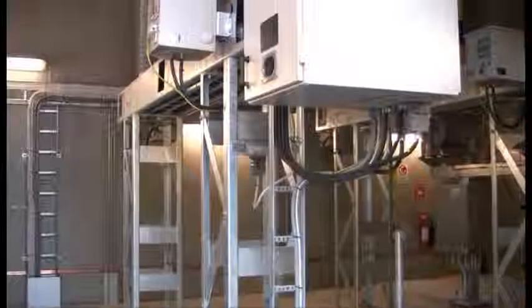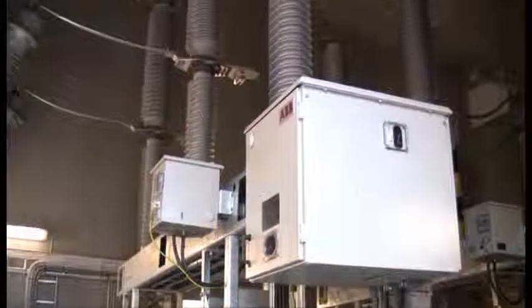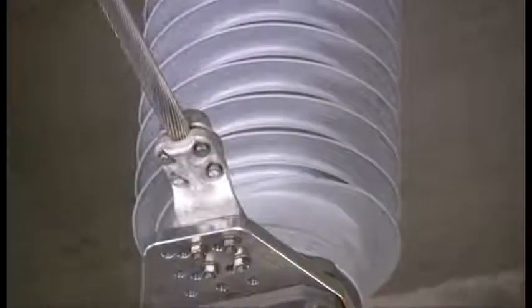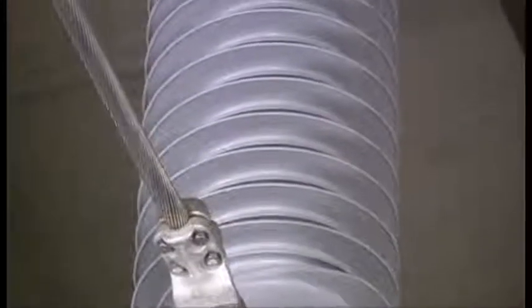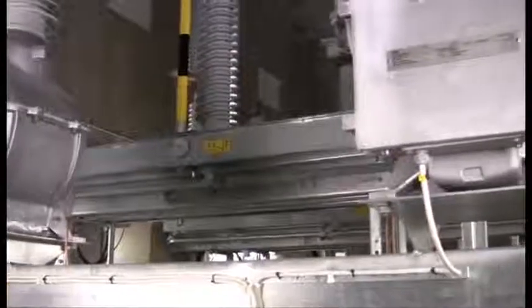The substation is equipped with ABB's disconnecting circuit breakers, which have both braking and disconnecting functions integrated into the same device. This is a precondition for being able to make the station compact in that separate and space-demanding disconnectors can be eliminated.